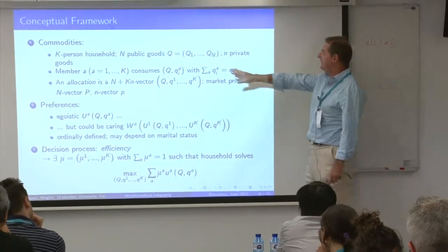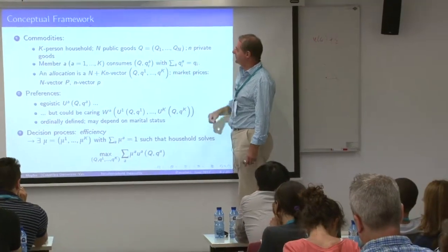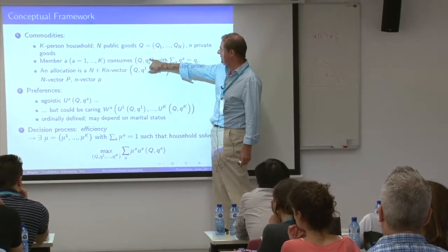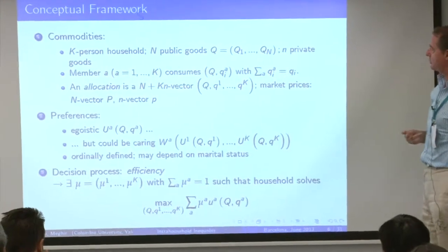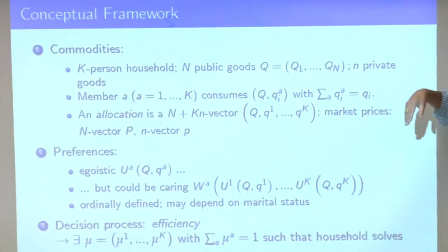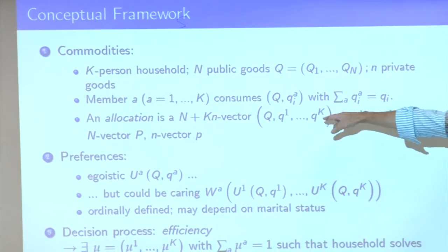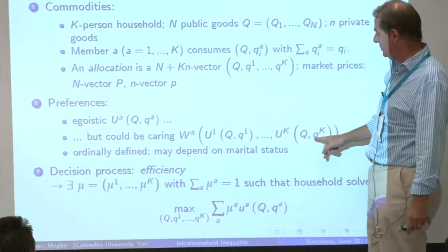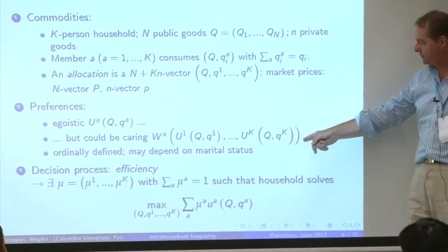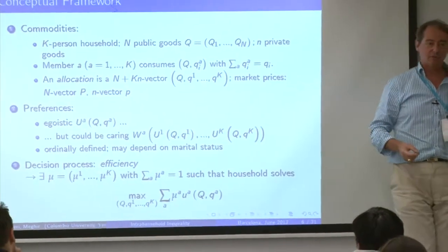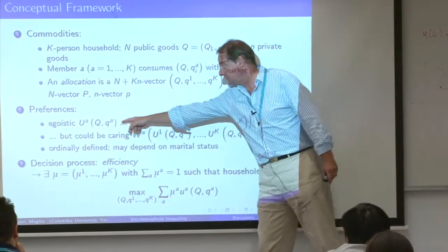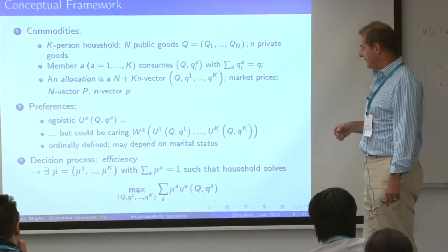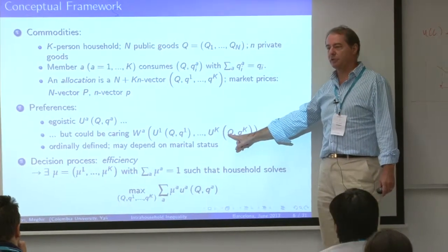What kind of model? I have N public goods and private goods. I is the index of the commodity and A is the index of the agent. I will mostly talk about couples, but the model applies to families with any number of people. I'm going to use egoistic utility — you can use altruistic or caring utility. Essentially what I'm assuming is efficiency, and anything that's efficient with egoistic utilities must be efficient with those. The utilities are ordinally defined — I'm just looking at preferences.